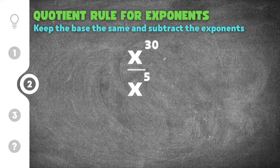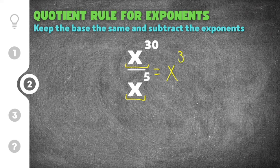Moving on to the second practice problem, this problem gives us x to the 30th power divided by x to the 5th power. We have the same base here of x, so that's going to stay the same. I'm going to rewrite my base over here, and then we have to subtract the exponents. Our first exponent is 30, and I'm going to subtract that by our second exponent, which is 5.